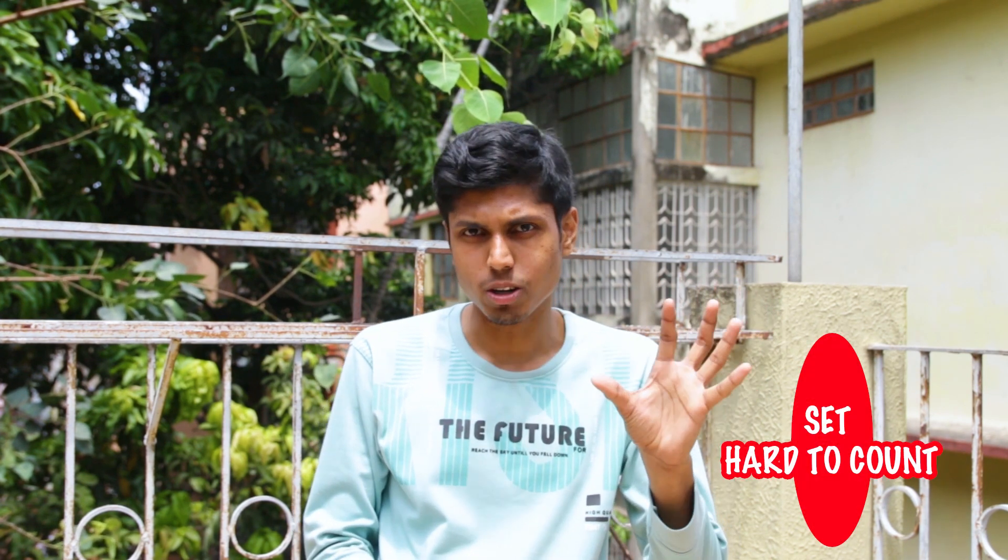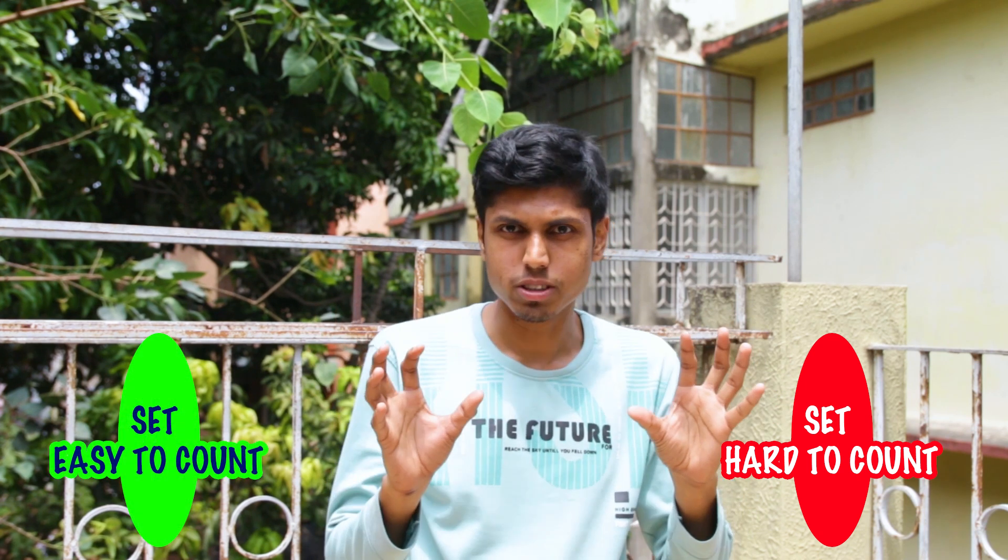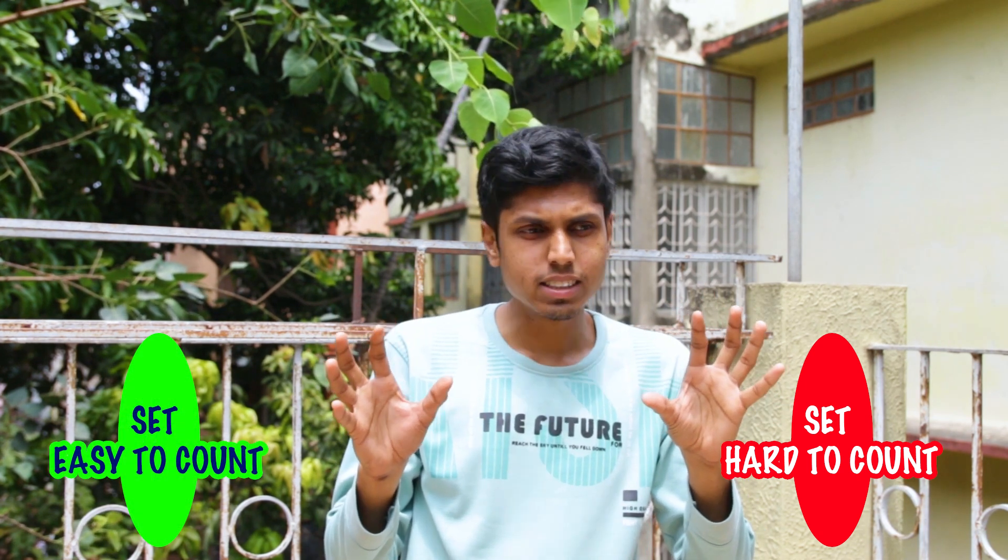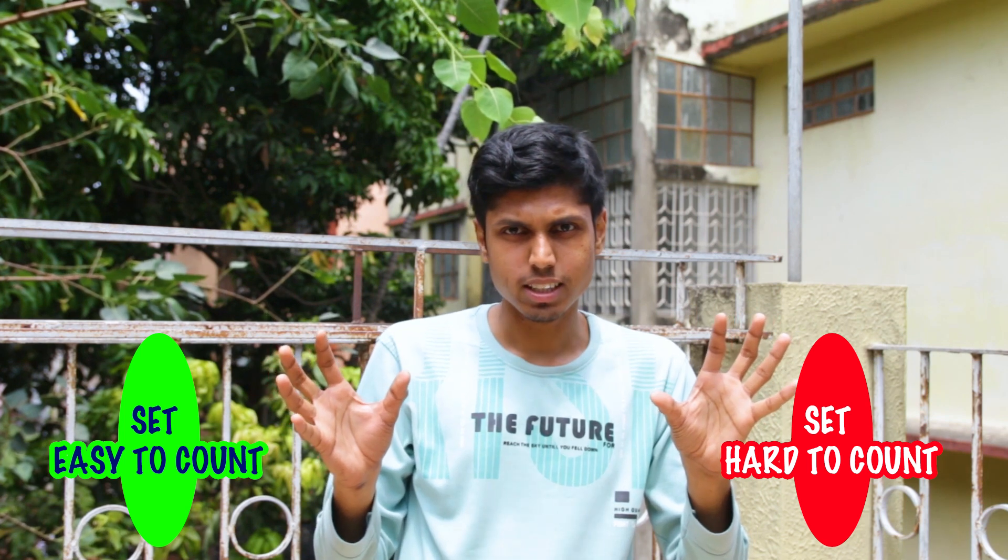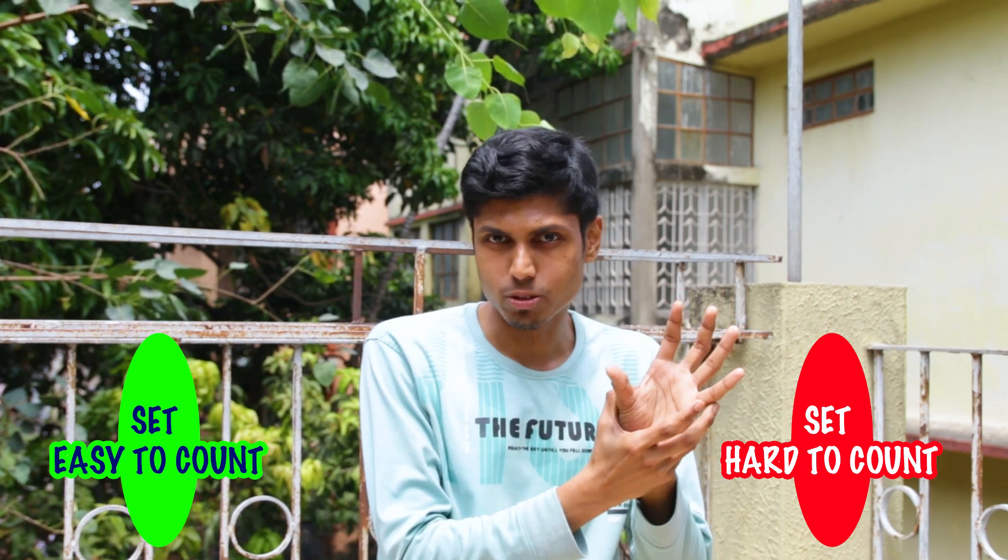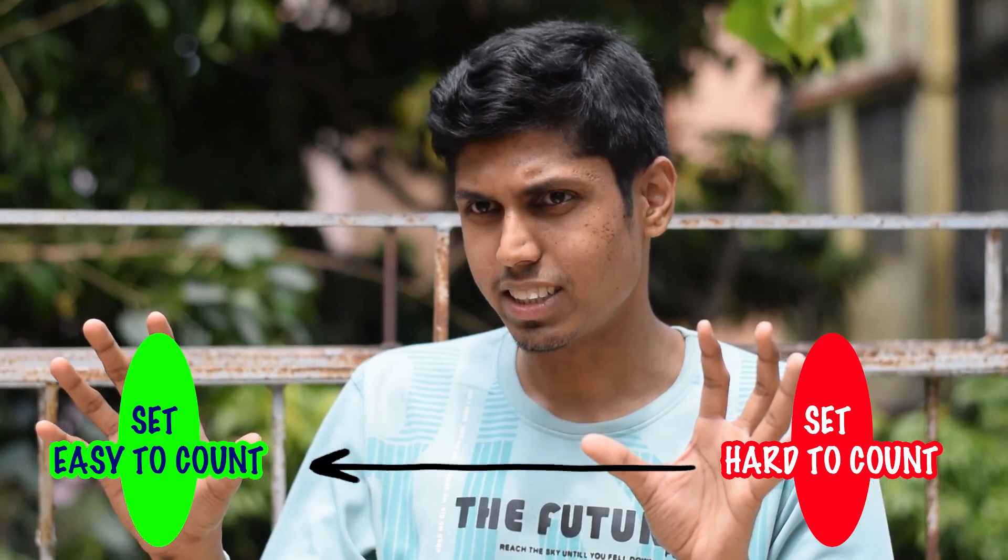For example, if you have a set that is very hard to count, and suppose you have another set which is easy to count. This bijection is a relation between these two sets that takes the hard set and maps it to the easier set, so that counting this is same as counting this.